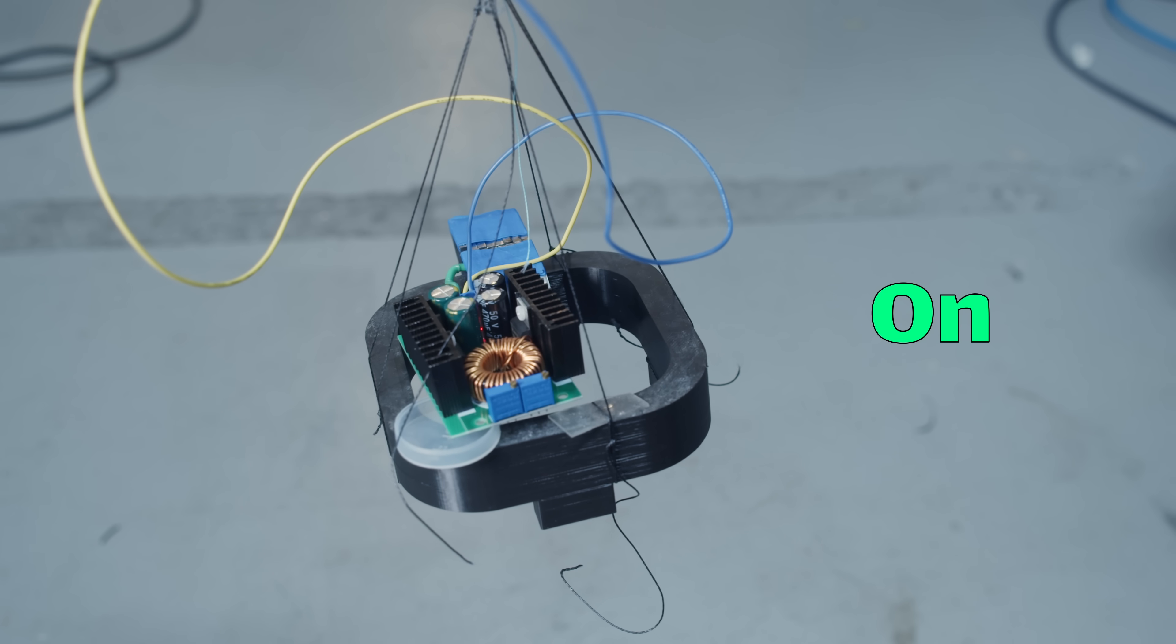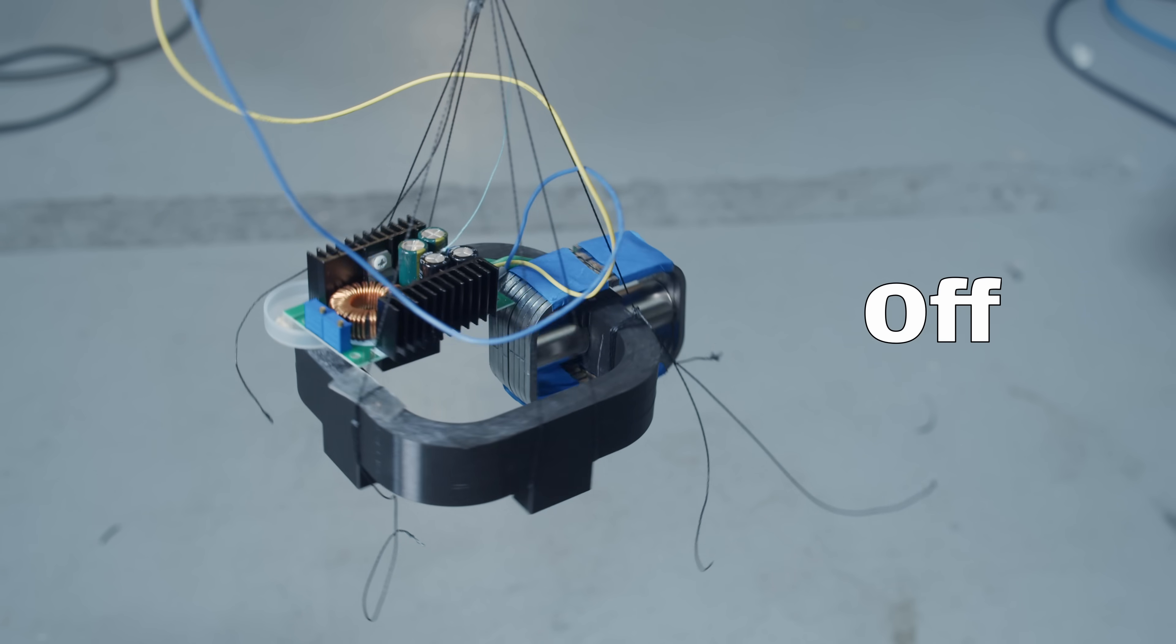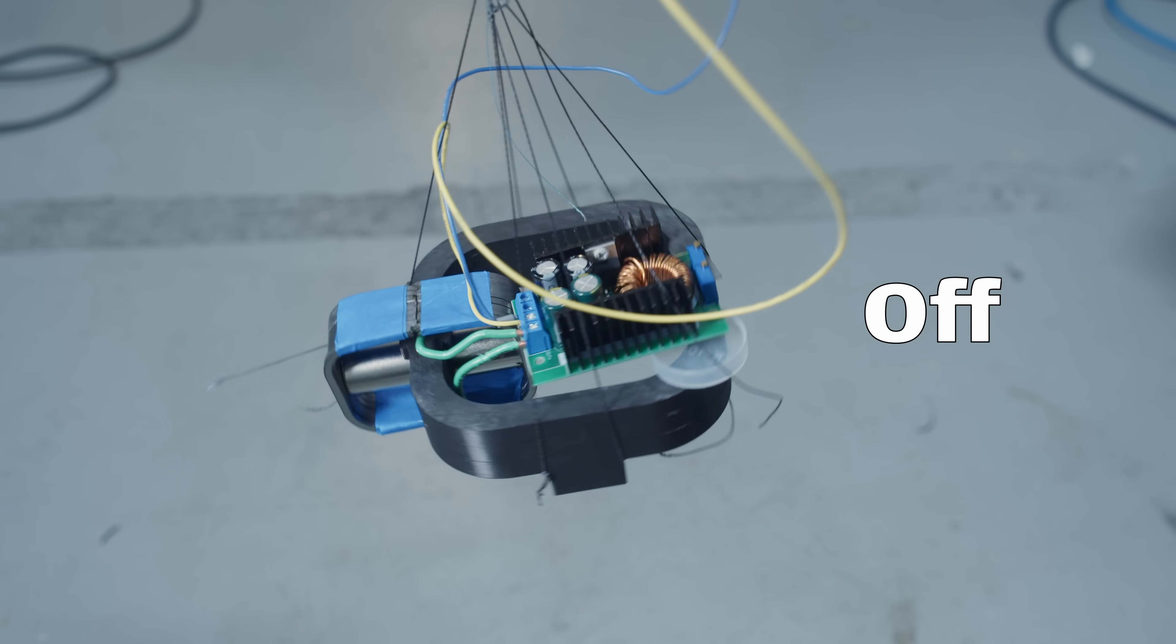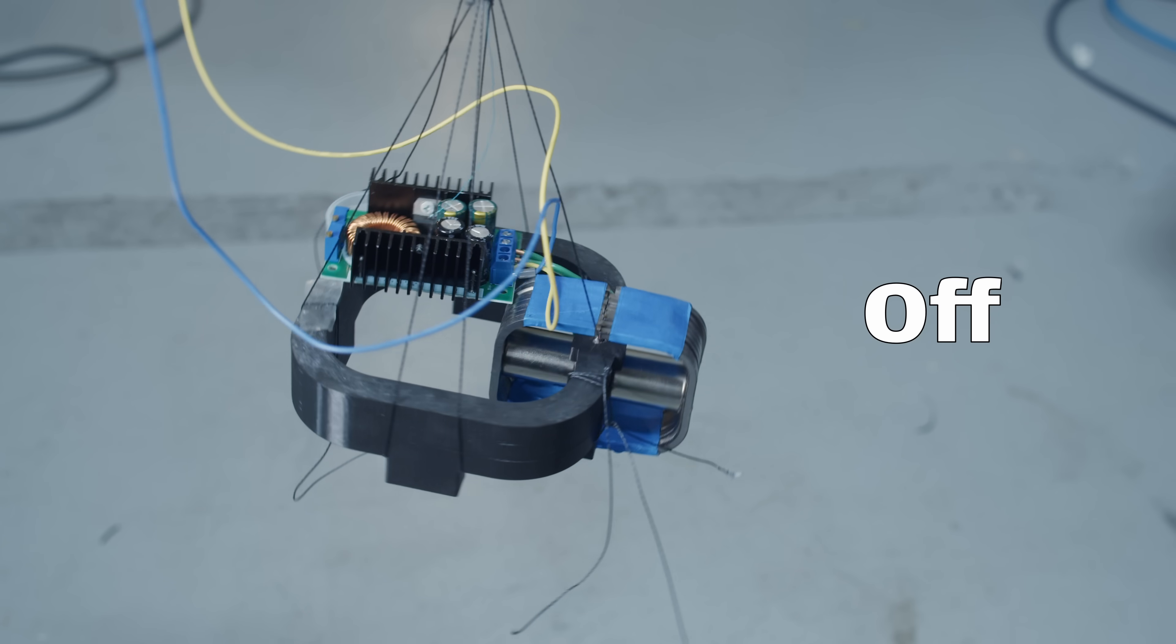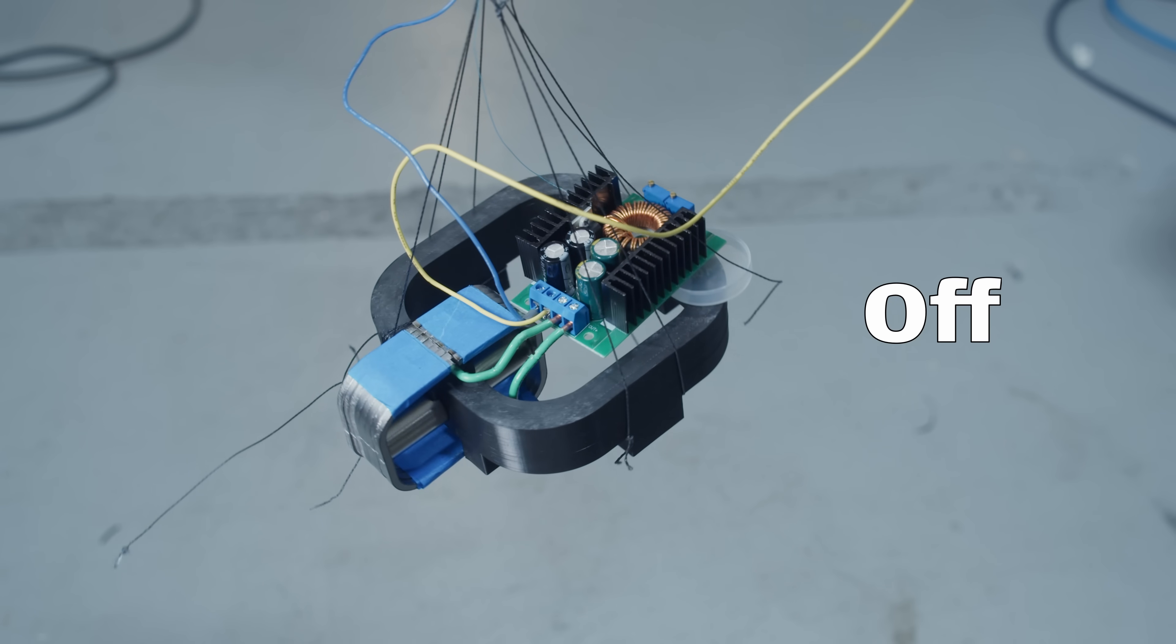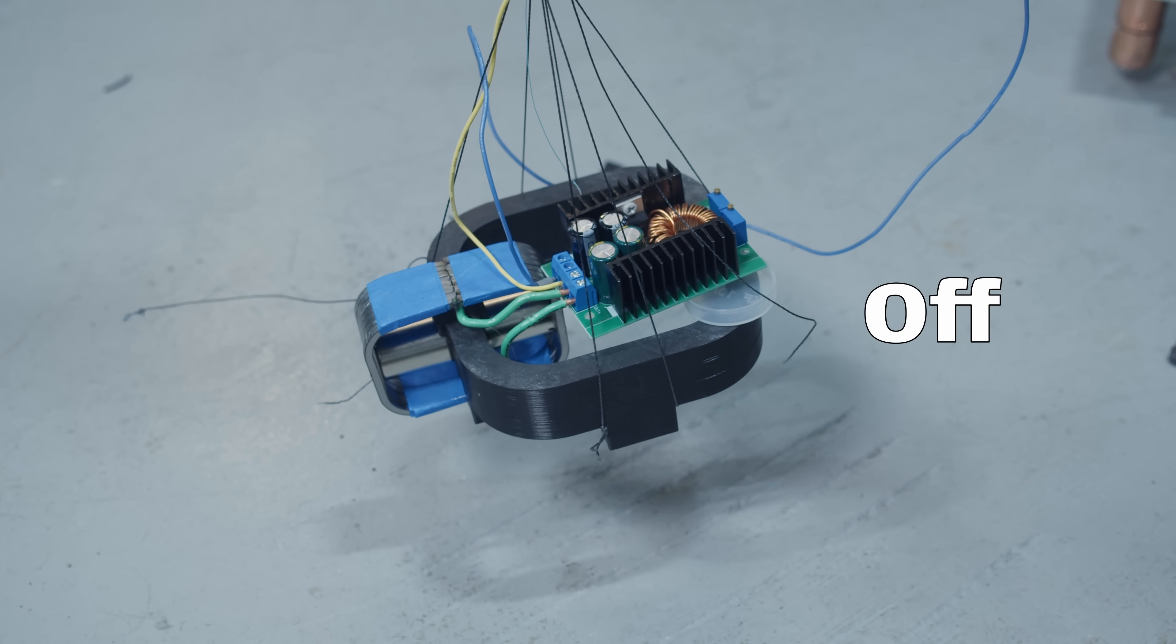The power wires again prevent it from fully rotating, but the motion is a lot more obvious than the first device. The increased diameter and volume of the liquid metal means it can generate a much larger torque than the first one.